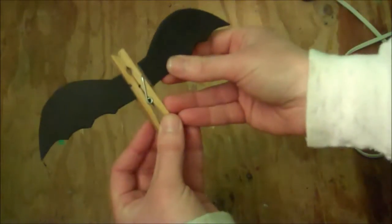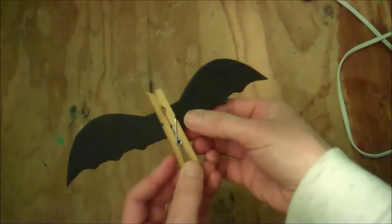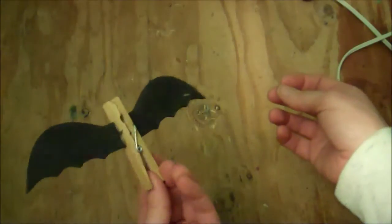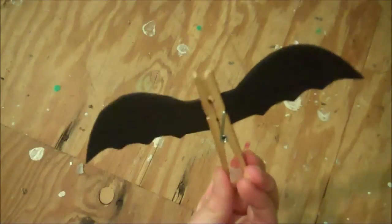Then put some hot glue on the other one and glue it directly across from the first one. It should still be able to open.